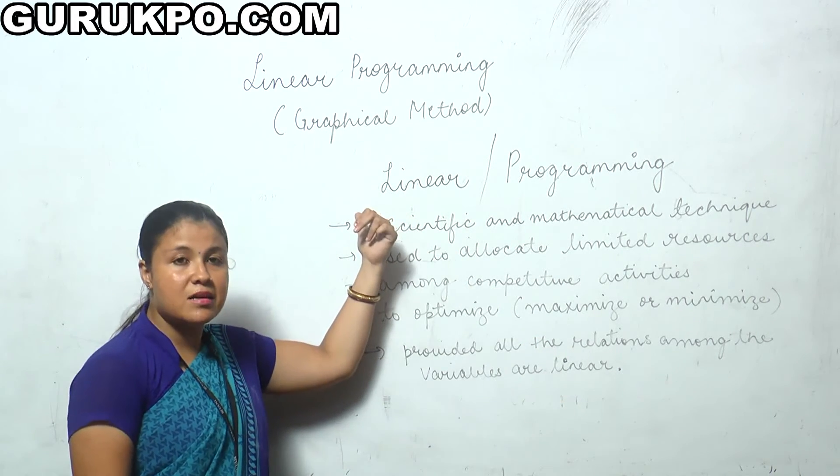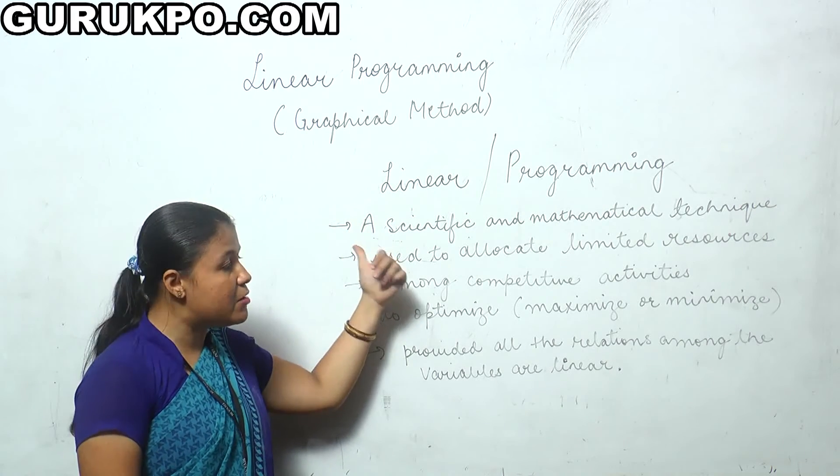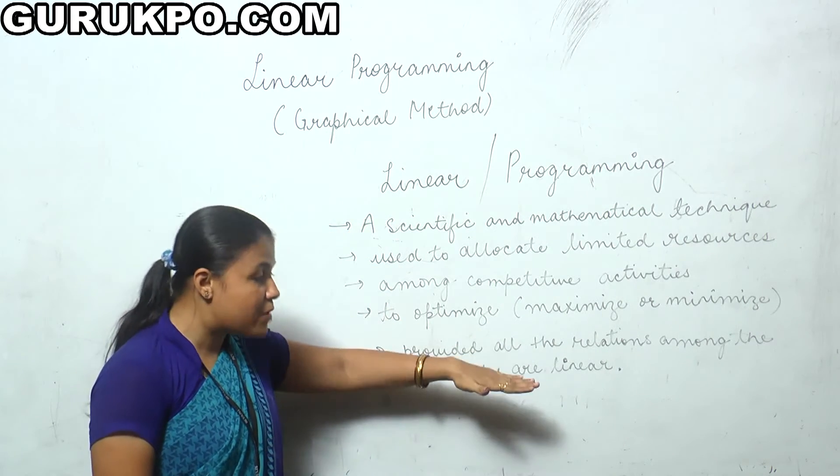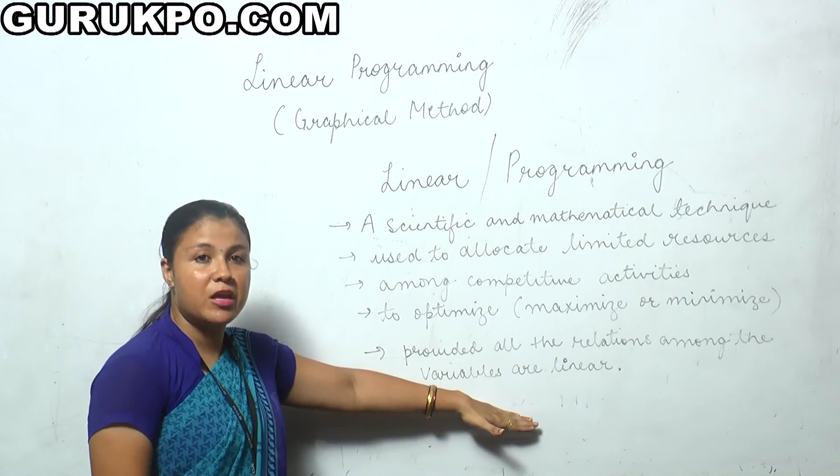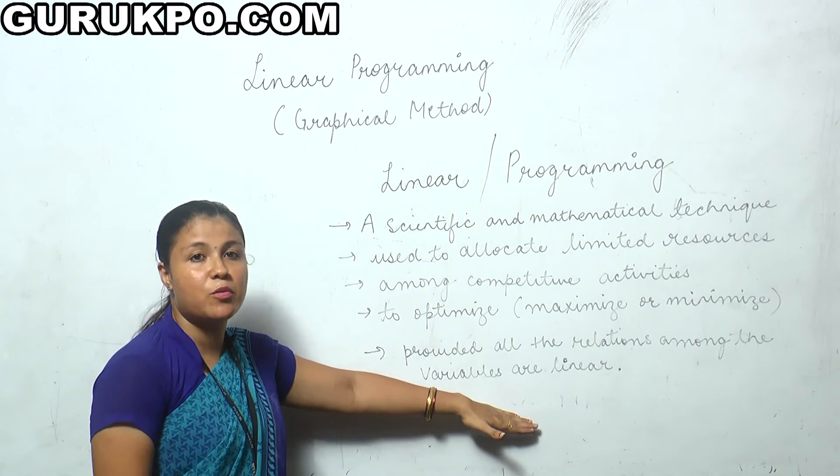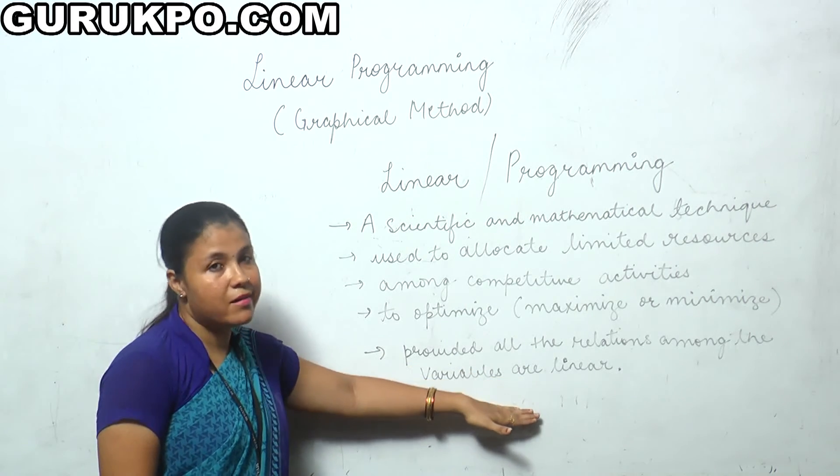As I have already discussed, the relations among the variables should be linear. I am again highlighting that the variables we use in linear programming should be linear in relation.